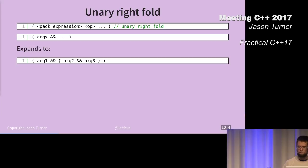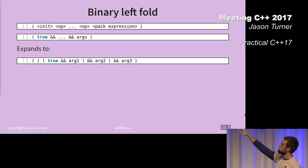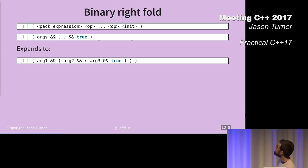The binary folds let you put some sort of initialization in here. This is completely gratuitous to say true and whatever because that's just going to get compiled away. These make sense so far? Binary right fold is the same deal, but you have the initialization on the right. Any questions before we move on?